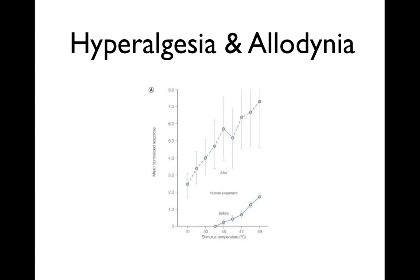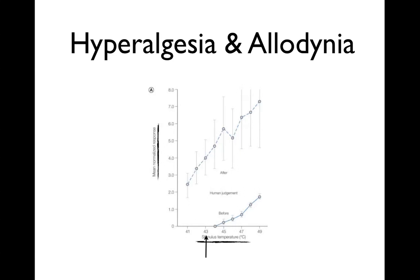Hyperalgesia and allodynia are two commonly used clinical terms and it's important that we have a full understanding of these. If we take this graph of stimulus temperature against pain ratings, we see that in a non-injured individual a person will perceive a heat stimulus as painful at around 43 to 44 degrees centigrade. At 43 degrees, the pain rating is 0 — it's an innocuous, non-noxious stimulus.